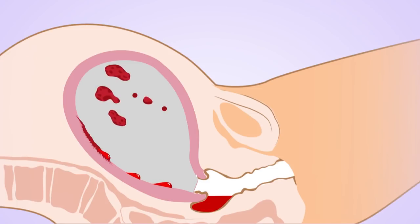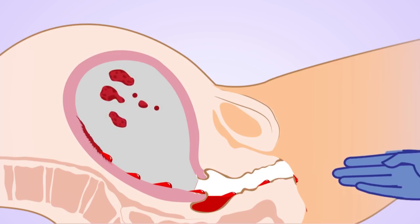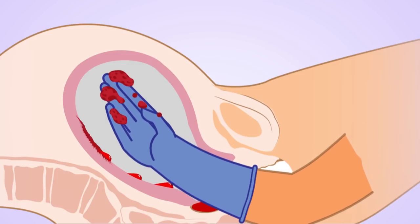You may see failure of uterotonic usage as bleeding is continuing. Lacerations are excluded, then cleaning from placental remnants and blood clots follows.